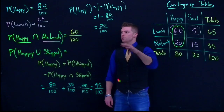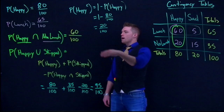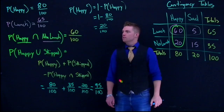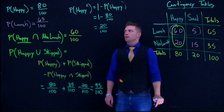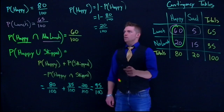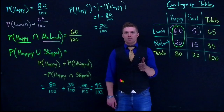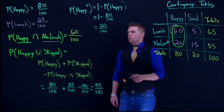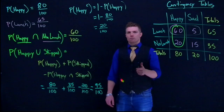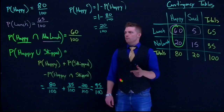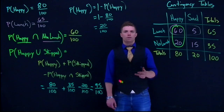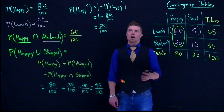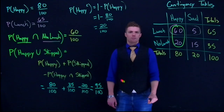There are lots of ways to work through these different probability operations. To summarize: we've covered the probability of individual events, the intersection of two events, the union of multiple events, and the complement of events.